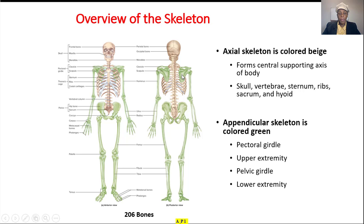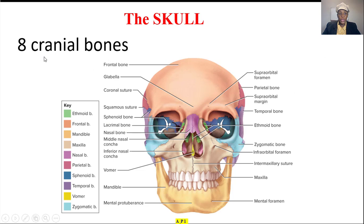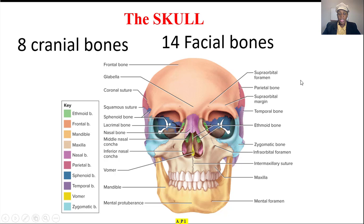And the appendicular skeleton in green is made of the pectoral girdle, upper extremity, pelvic girdle, and lower extremity. The skull is divided into eight cranial bones and 14 facial bones.